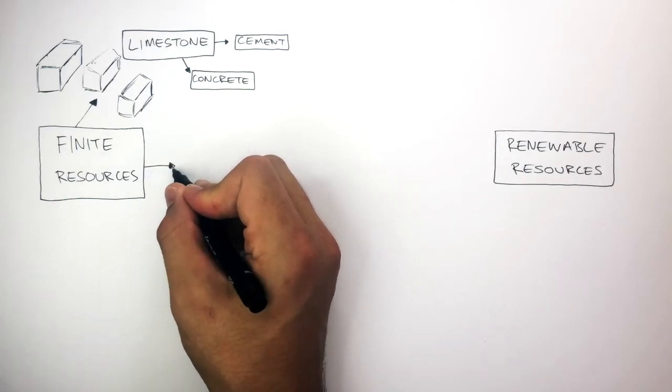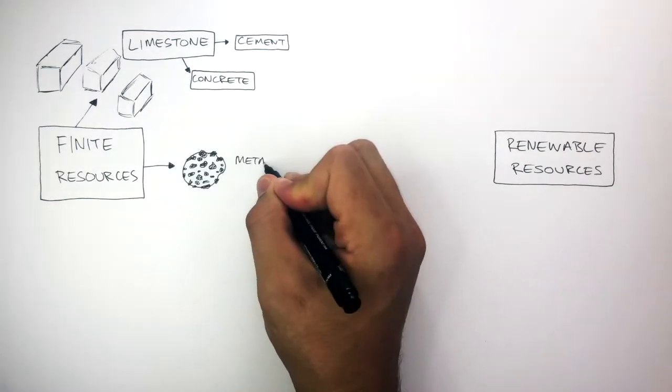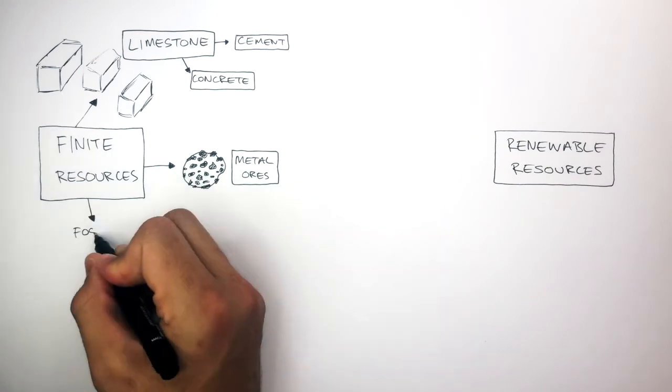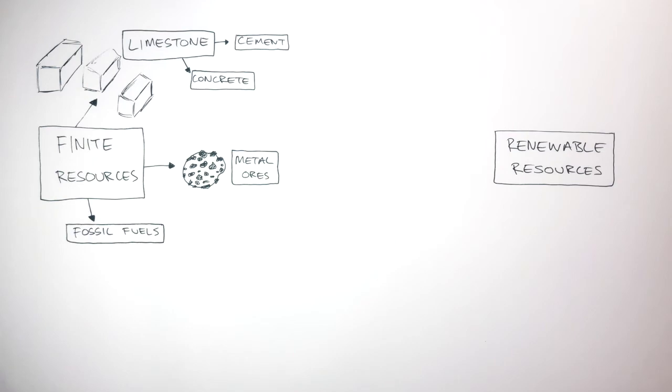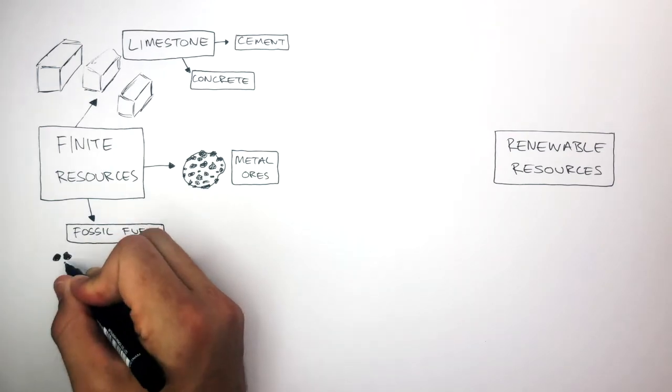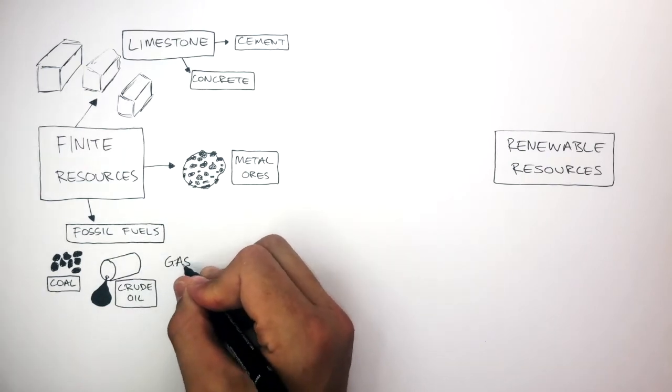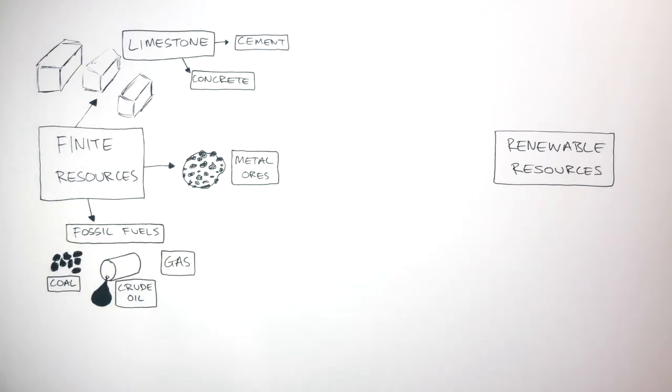Another finite resource are metal ores. Metal ores take millions of years to form, and we use them up very quickly. Fossil fuels is another type of finite resource. There are three types: coal, crude oil, and gas. All of these finite resources take millions of years to form, and we use them up very quickly. So it's just not possible to replace them at the same rate as we use them.